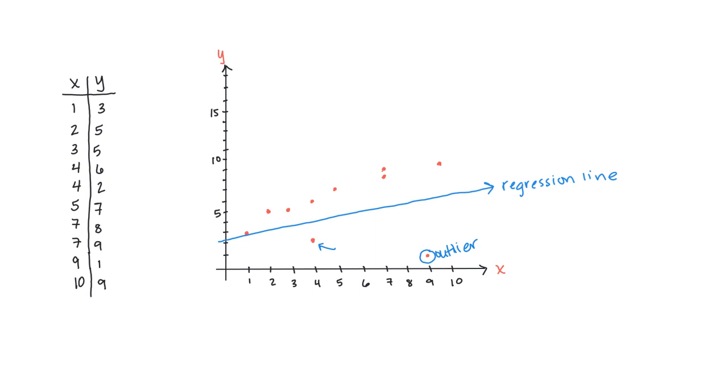Oftentimes what we'll find is that we prefer to strike that outlier from the data set, not include it. And if we do that, our regression line will look a little different. Let's focus on the regression line that does not include the outlier.